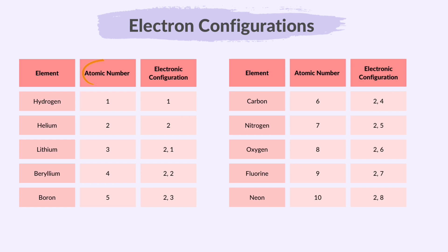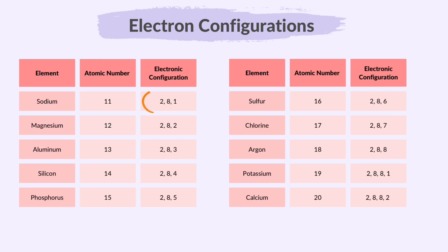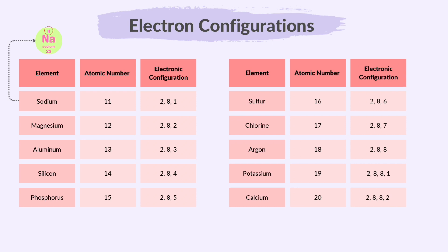Remember: 2 electrons in the first shell, 8 electrons in the second shell, and 8 electrons in the third shell. Electron configuration can be shown using shell diagrams or notation, where we simply write the number of electrons in each shell and separate them by commas. For example, let's consider sodium or Na with an atomic number of 11. Its electron configuration in notation form would be 2, 8, 1.